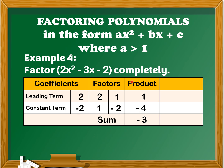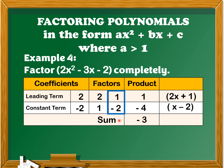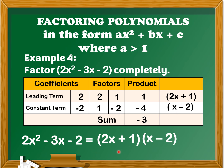The factors we used are correct. The first factor is 2x plus 1 and the other factor is x minus 2. Therefore, 2x squared minus 3x minus 2 is equal to the quantity of 2x plus 1 times the quantity of x minus 2.